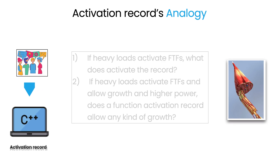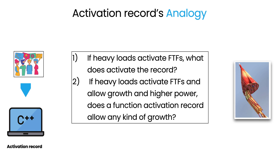For example: if heavy loads activate fast-twitch fibers, what activates the activation record? If heavy loads activate fast-twitch fibers and allow growth and higher power, does a function activation record allow any kind of growth — and if yes, which one? If the two situations were to unfold the same way, what would the expected cue look like? Your task is to transfer new knowledge. This is a far better option than merely simplifying through the first analogy that comes to your mind.